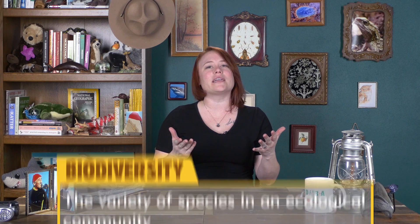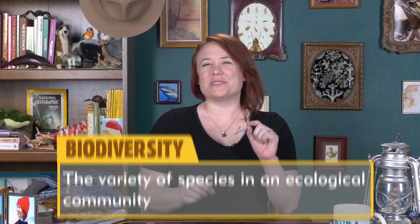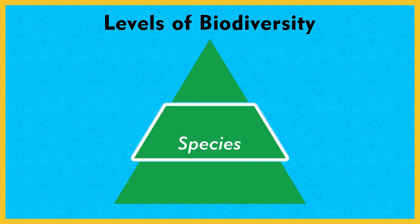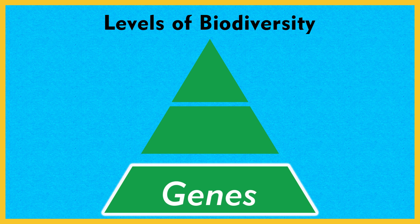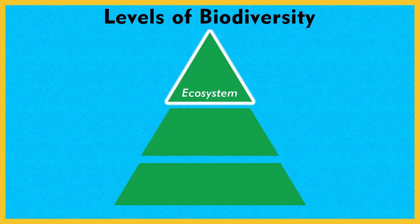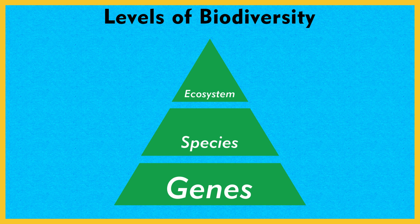Let's back up a second. I said species level because there are actually several accepted ways to think about biodiversity. The species level definition goes something like the variety of species in an ecological community. But species level biodiversity doesn't quite tell the whole story. We can also think of biodiversity on the genetic level, which determines the evolutionary potential of all of those species. Biodiversity can also be considered on the ecosystem level. So a much more realistic view of the diversity of life on Earth is one that spans all the way from genes to ecosystems.